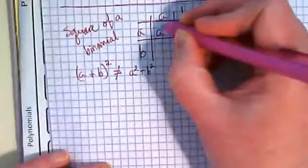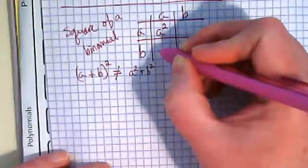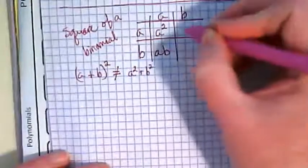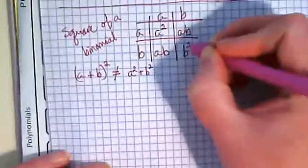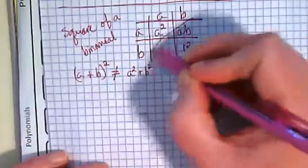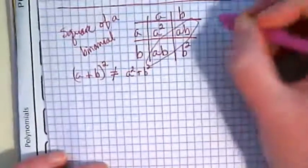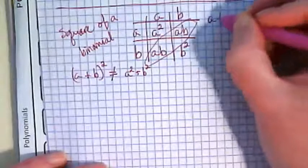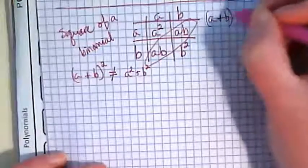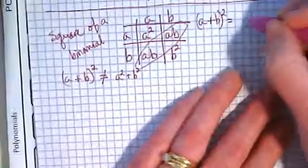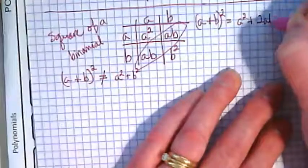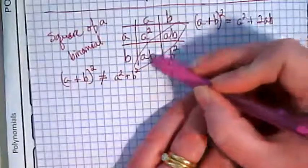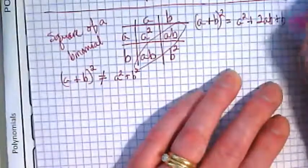a times a is going to be a². a times b is going to be ab. You have another ab here and b². What we have here are like terms. So what we find is (a + b)² is equal to a² + 2ab + b².